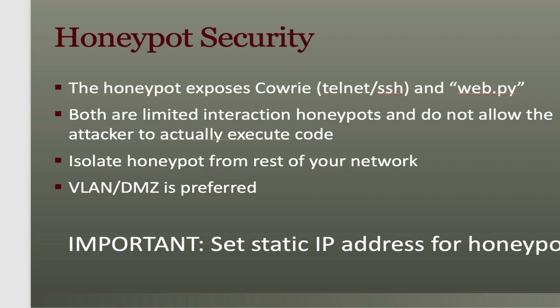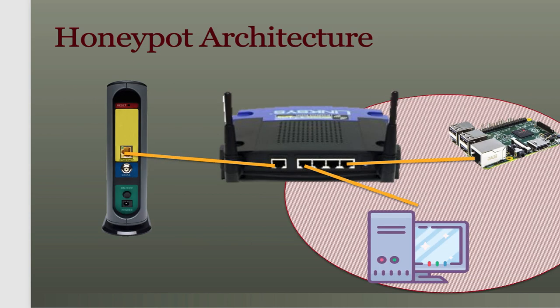Let's talk about the overall architecture. This is your classic home network: you have a cable modem or DSL modem plugged into some kind of Wi-Fi router — I use the classic Linksys here. The output on these typical home routers is a four-port switch, so there's no real isolation between the different ports. We will have to expose the honeypot, and that's why it's important it has a static IP address, so DHCP addresses don't get reassigned and you don't accidentally expose one of your workstations to the internet.